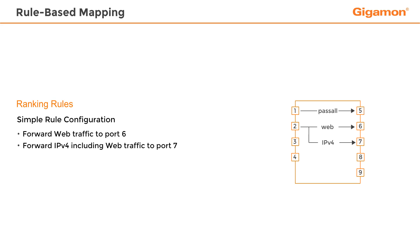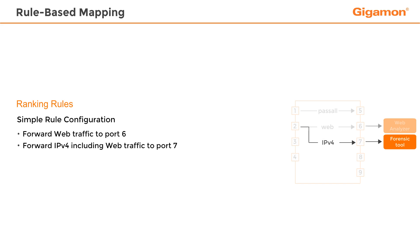Consider the displayed map. In this configuration, the intent is that web traffic should be delivered to a tool that is optimized for web inspection and is attached to port 6, and all IPv4 traffic, including web traffic, is forwarded to a forensic tool attached to port 7. If these rules are written without considering rule priorities, then the outcome of rule matching fails to meet the desired outcome.